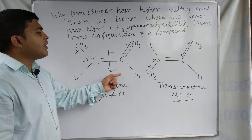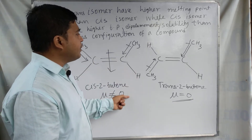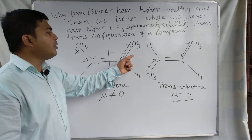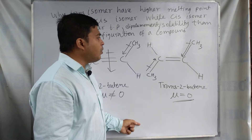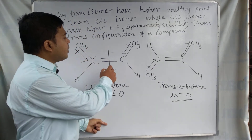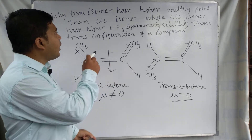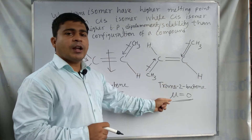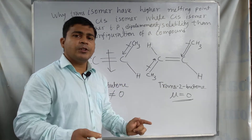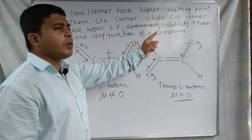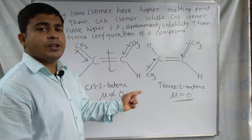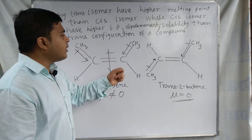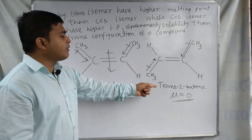Because the cis isomer has a large dipole moment and polarity, its boiling point is higher. The trans compound is non-polar, so it has a lower boiling point. The dipole moment is higher in the cis isomer; in the trans isomer the dipole moment is negligible or zero. Regarding solubility, the cis isomer has higher solubility due to its polar nature, while the trans isomer has lower solubility because of its non-polar nature. The refractive index is also higher for cis-2-butene than for trans-2-butene.